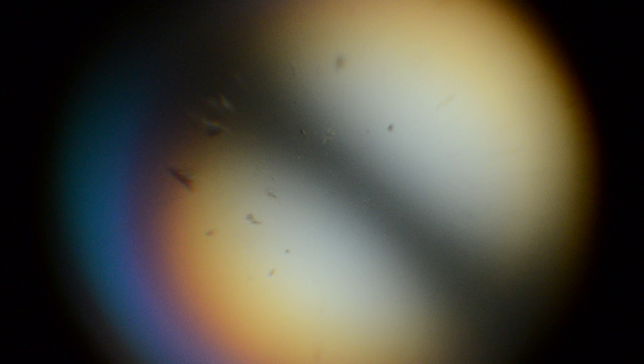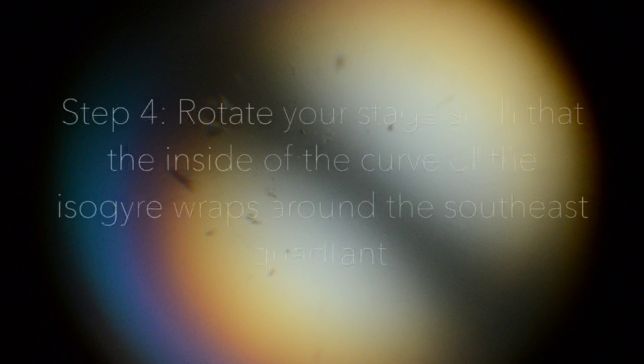The interference color bands circling the isogyre are called isochromes. The center, or elbow, of the isogyre is where there is an optic axis. This is called a melatope. Since we have two isogyres, we have two optic axes. This is where we get the term biaxial mineral. This is known as the optic axis centered biaxial interference figure.